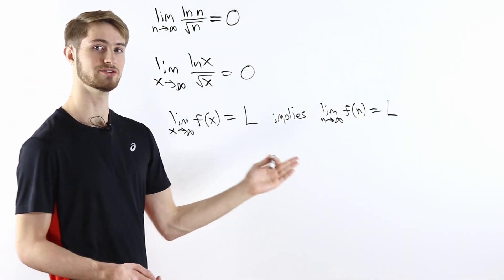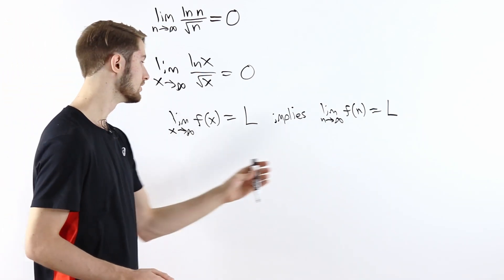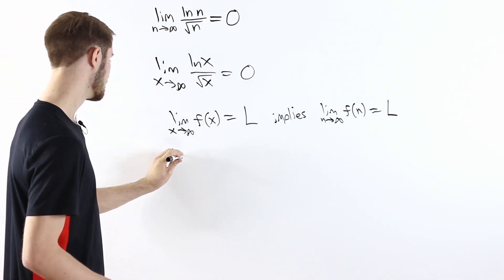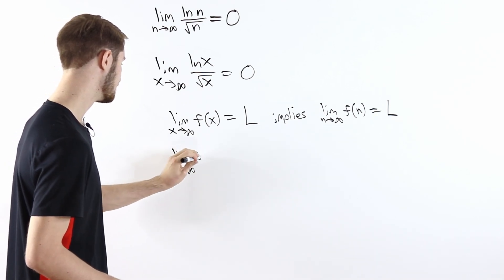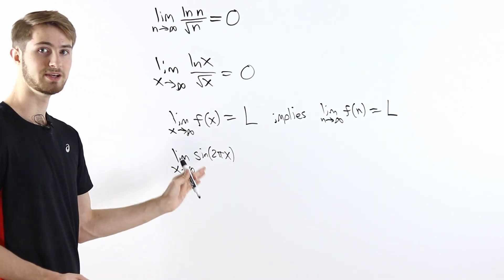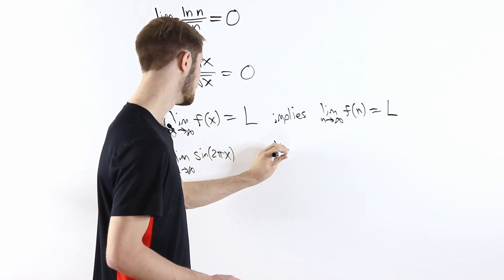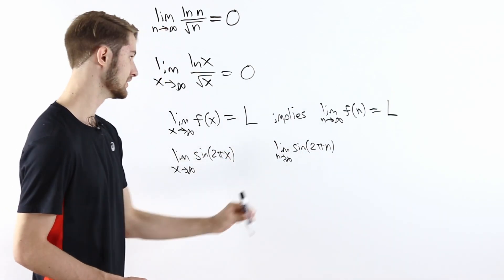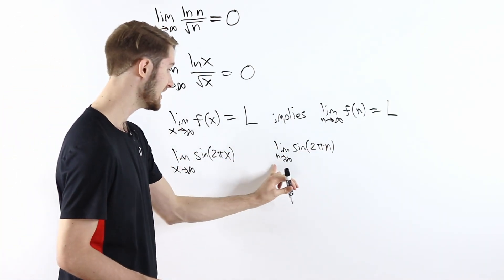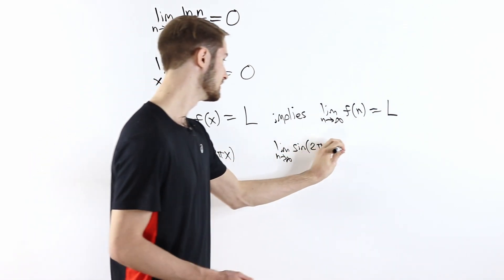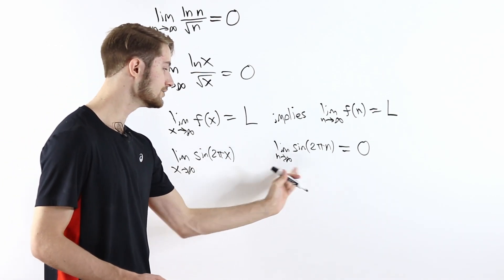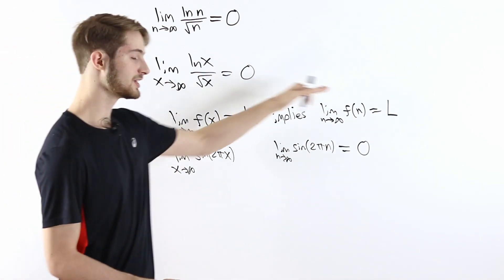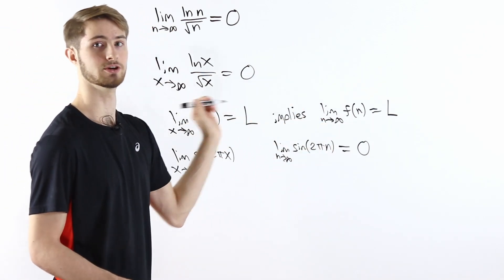The question is, why is this true? Because this statement holds for any function f, but notice that the same thing does not hold in reverse. For example, consider the limit as x goes to infinity of sin(2πx). This limit does not exist, but if we look at the limit as n goes to infinity of sin(2πn), when n is an integer, sin(2πn) equals zero. So the limit as n goes to infinity equals zero, but the limit as x goes to infinity does not exist. This implication only works from x to n — it doesn't go the other way around.